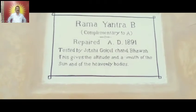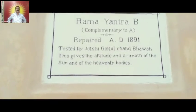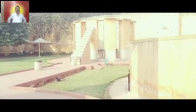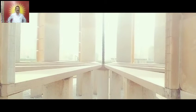Two parts were made so you can walk inside for calculation. That is Ram Yantra B. It was constructed in 1728. Please don't confuse — that date refers to a repair in 1891 AD, tested by Jyotshi Gokul Chand Bhaman. After restoration he tested whether it was working correctly or not.